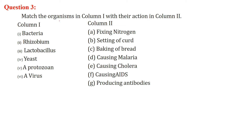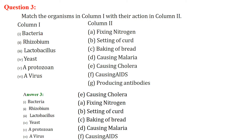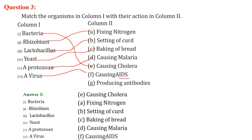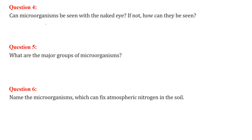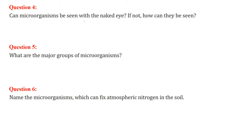Match the organism in column one with their action in column two. Bacteria — causing cholera. Rhizobium — fixing nitrogen. Lactobacillus — setting curd. Yeast — baking of bread. Protozoa — causing malaria. Virus — causing AIDS, acquired immunodeficiency syndrome (HIV).